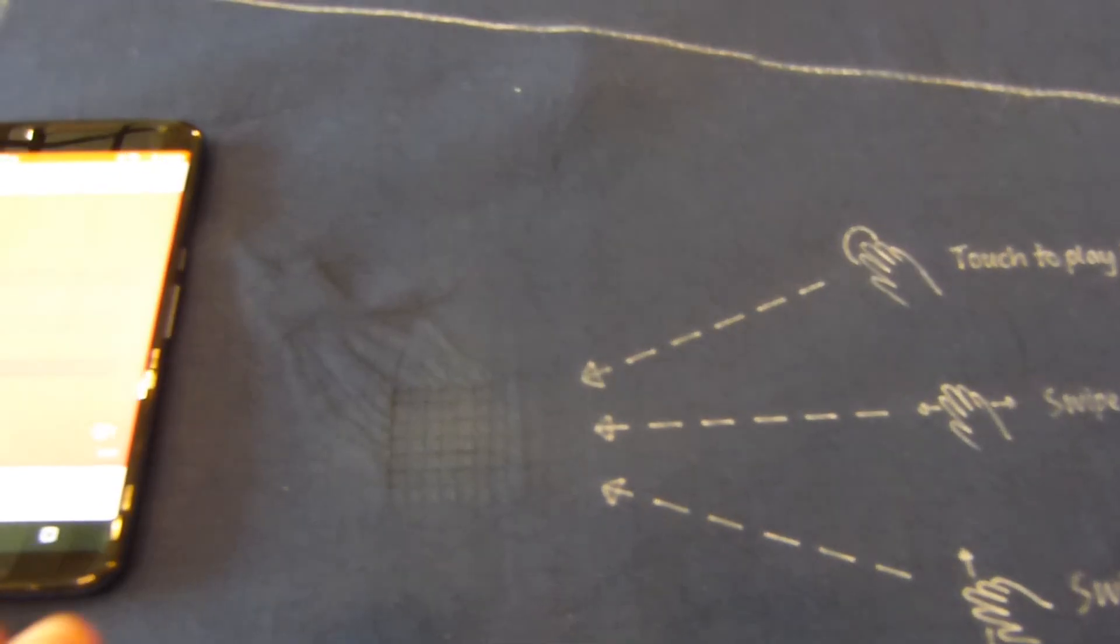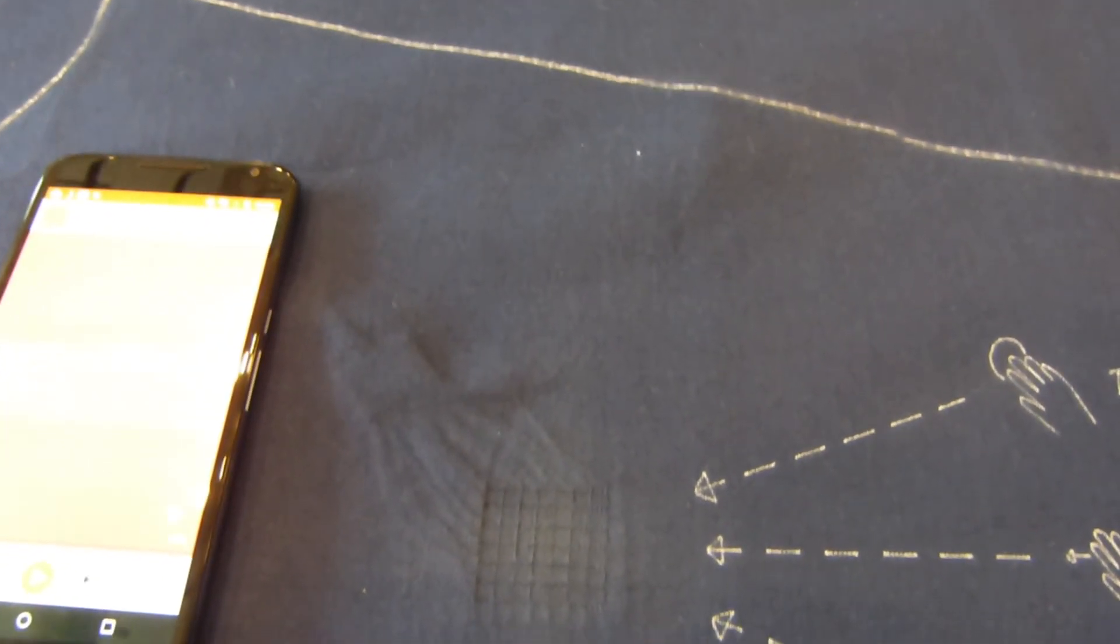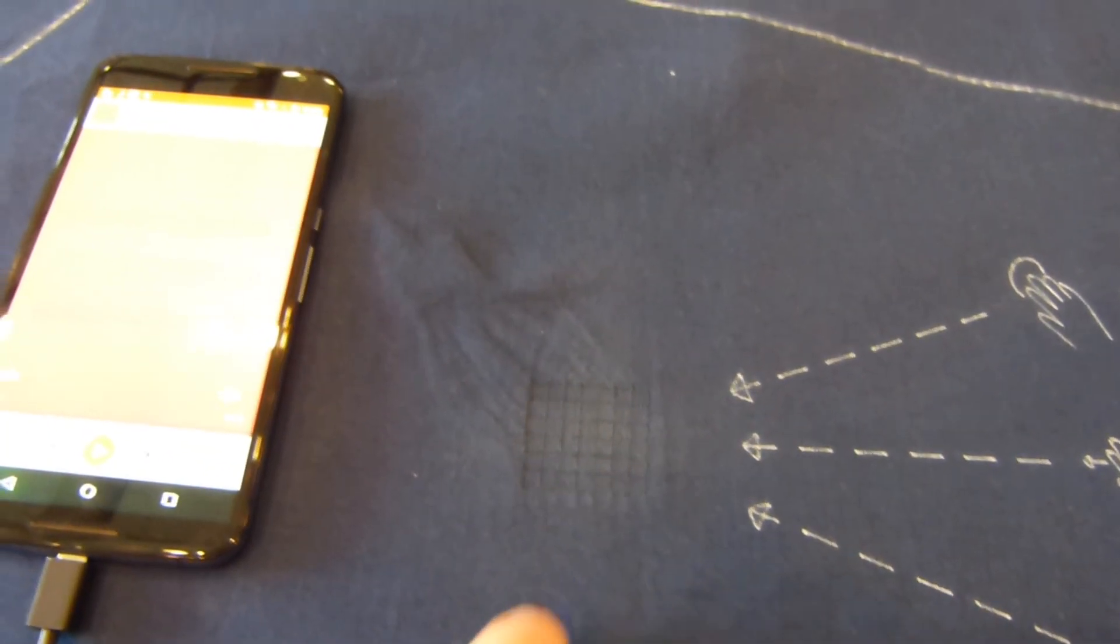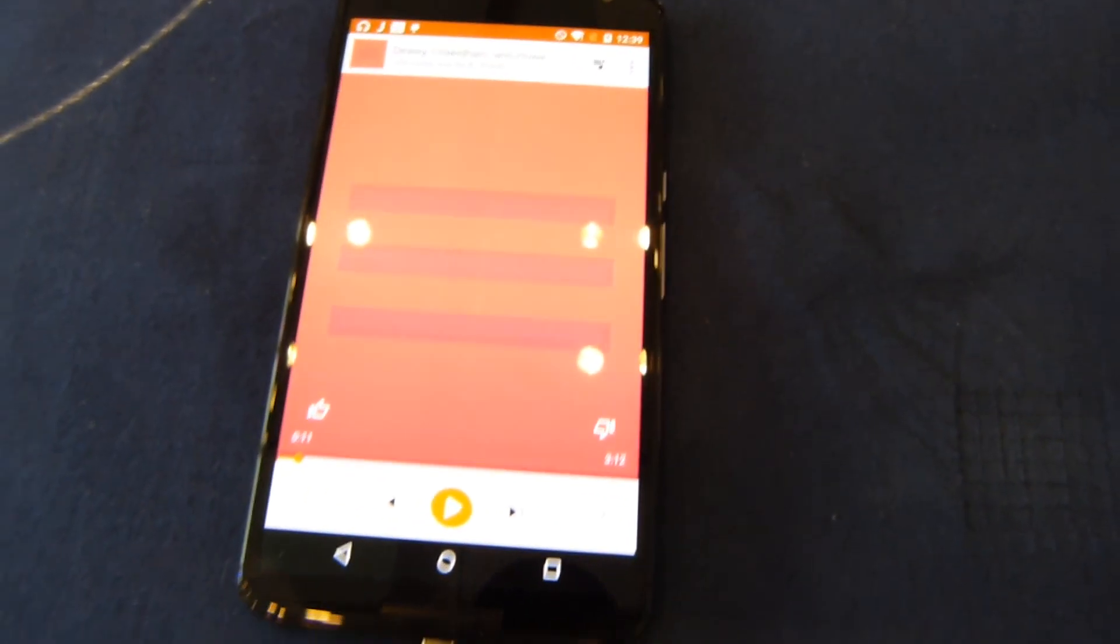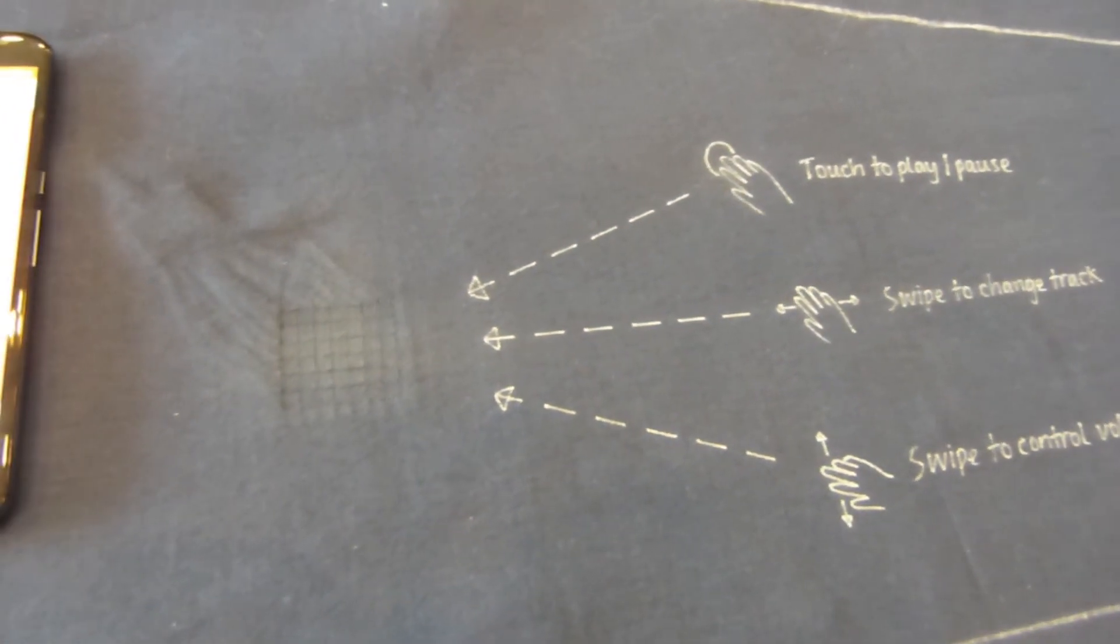So here we've got another demo set up where you can do music control. We got our one little one inch square patch of conductive fabric. We've got Google Play Music loaded here and we've got some pre-canned controls to see this in action.